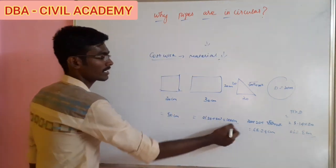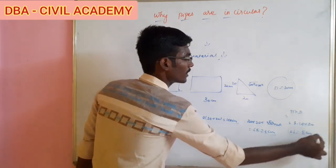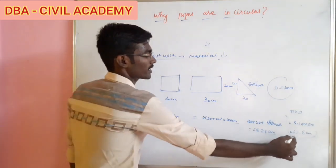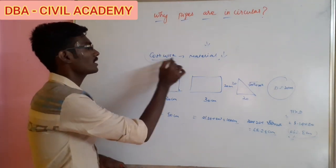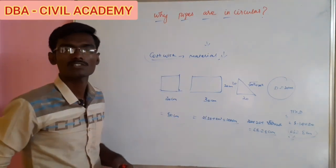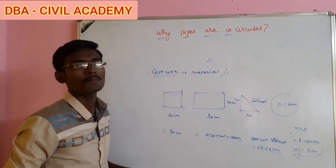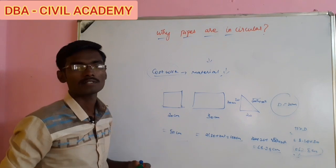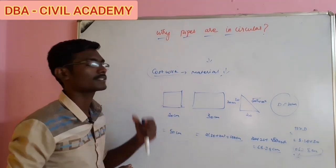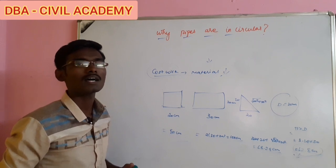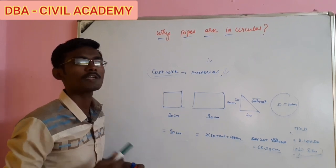If you look at this perimeter comparison, you see the circular shape has the smallest perimeter. So the circular shape is the most economical. If we look at it cost-wise, a circular shape is the most economical. But we can explain this in a technical way. There are two main factors for why a pipe has a circular shape. The first factor is pressure.